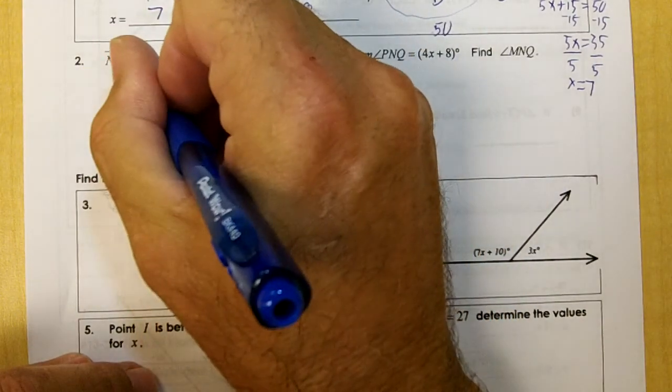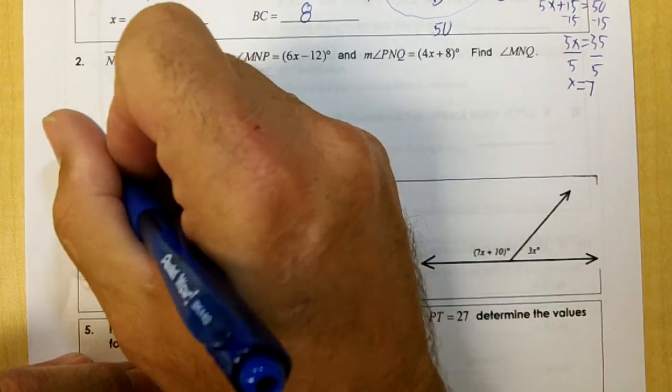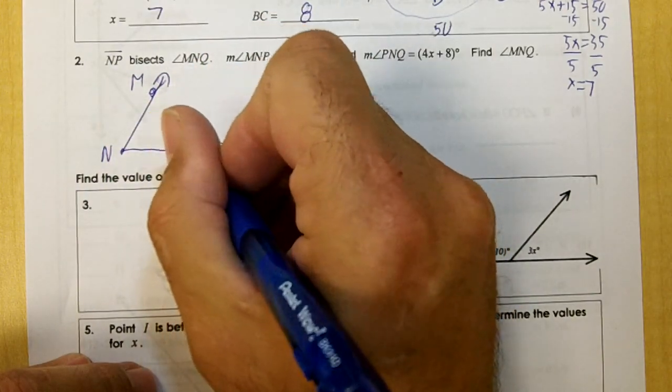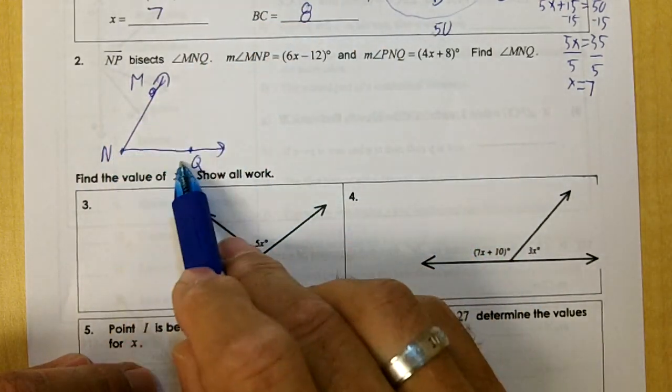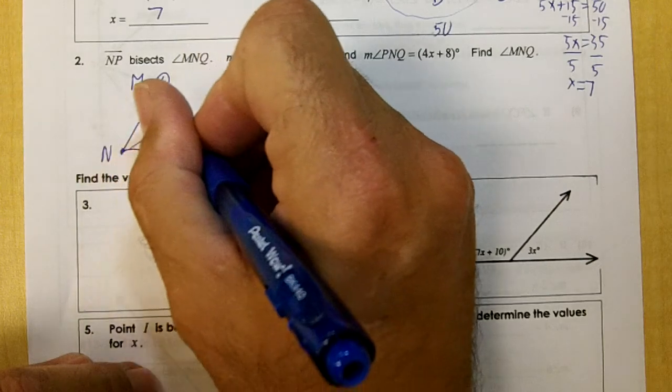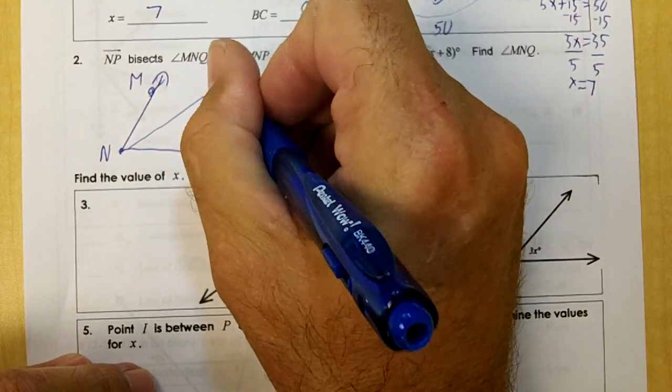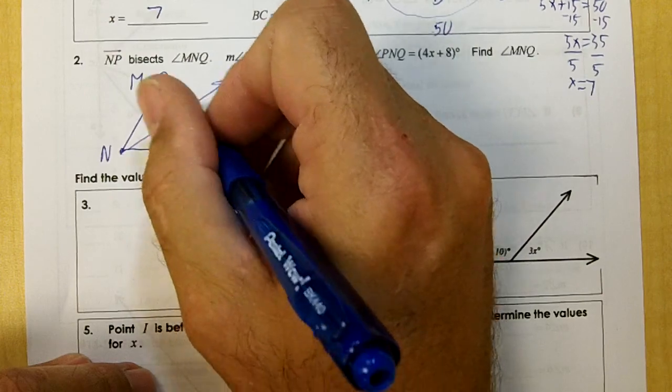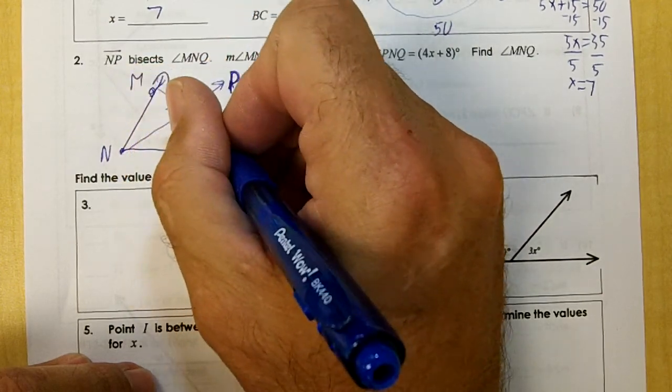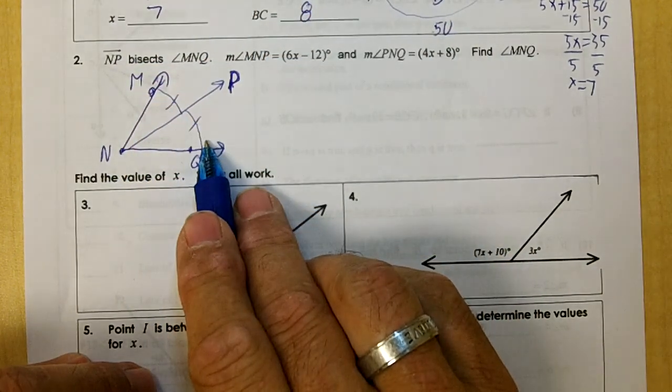So we're going to have angle MNQ. MP bisects this. This will be P. Since it bisects, we know that this angle is equal to this angle.